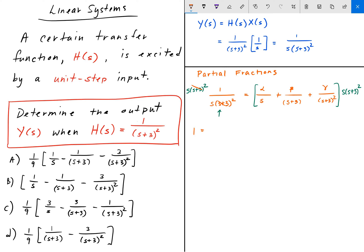And so, when we do that here, s(s+3)² multiplied on both sides, it cancels out giving us simply 1 on the left-hand side. And then you got alpha(s+3)² plus beta times s(s+3) plus gamma times s.